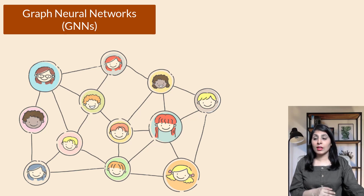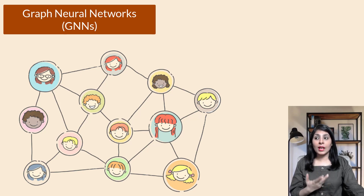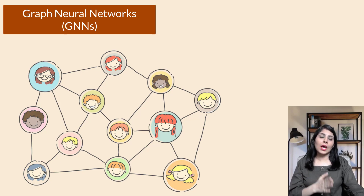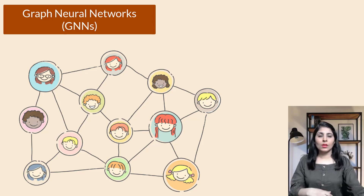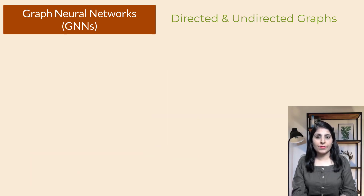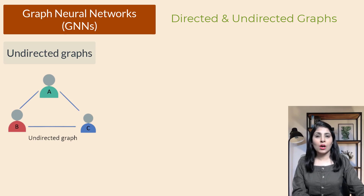GNNs are useful in many areas. They can help us understand social networks, recommend friends or products, and can be used in analyzing biological molecules and solving other problems where relationships between entities matter.